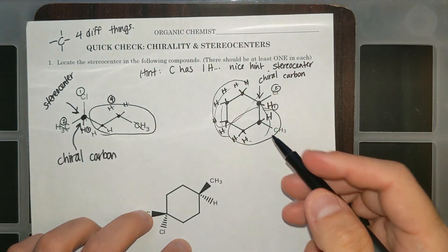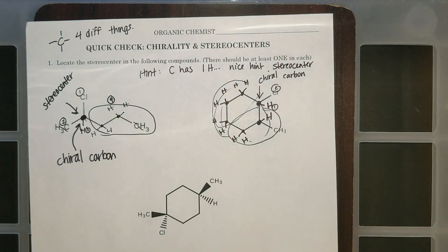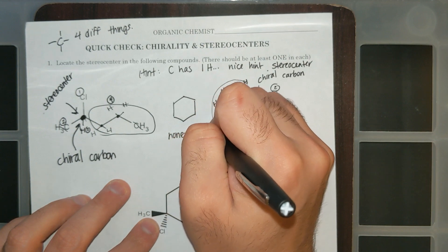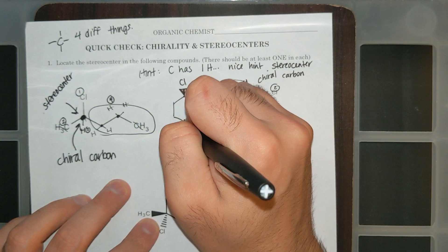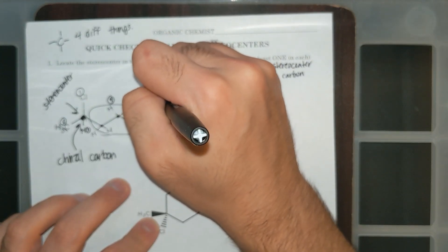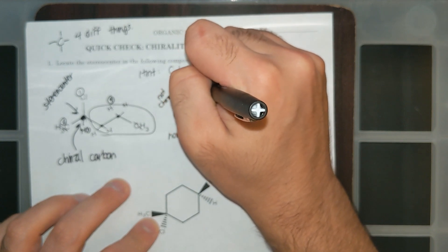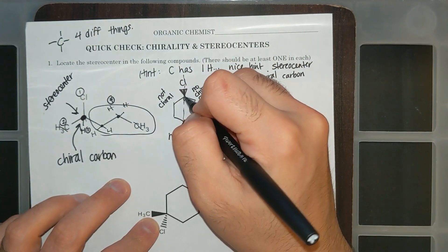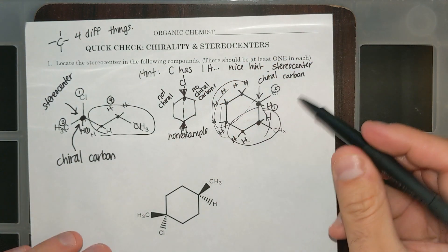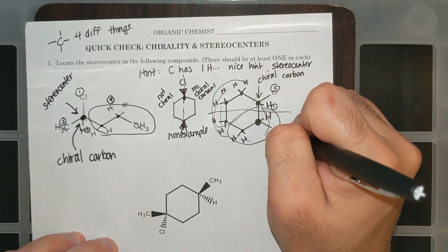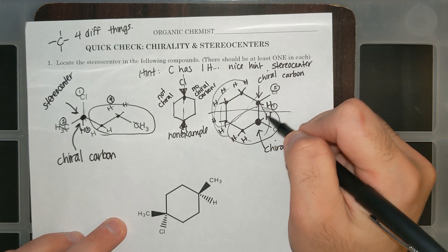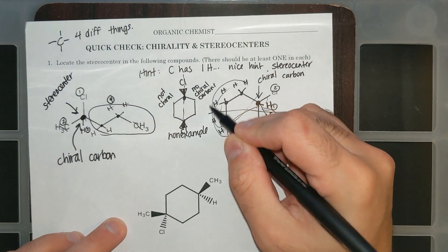That's a rule with rings: if it's not a symmetrical ring, or the left side doesn't look like the right side, it's going to be chiral. A non-example is if I had Cl up and Cl up — this has an internal mirror plane, so it is not chiral and has no chiral carbons. If I look at that carbon, there's one hydrogen, but the right side of the ring is the same as the left side — they both end at a chlorine going up. And this carbon attached to the CH3 is also going to be a chiral carbon, since the two sides of the ring are different.